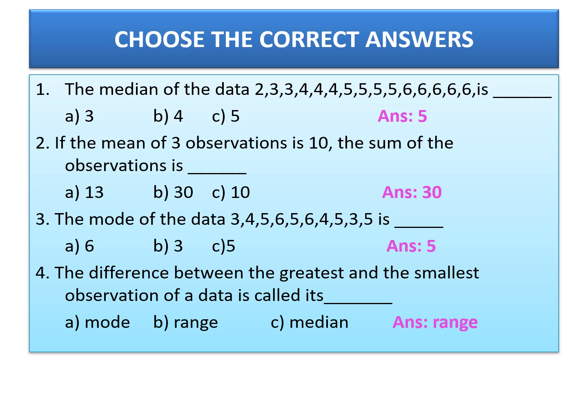Second question: If the mean of 3 observations is 10, the sum of the observations is dash. How to find the mean? Total sum divided by the number of observations. The answer is given as 10, and there are 3 observations. So the sum will be 3 into 10, which is 30. That means 30 upon 3 gives us 10.